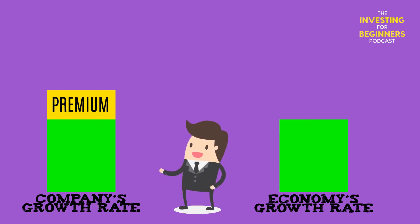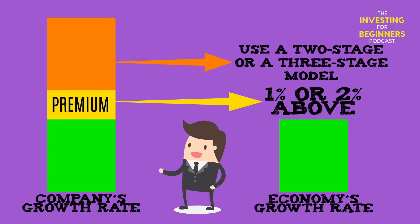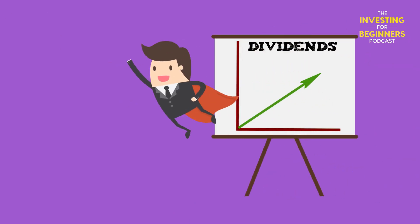Even in that case, the flexibility an investor has is limited. The sensitivity of the model to growth implies that the stable growth rate cannot be more than 1% or 2% above the growth rate of the economy. If the deviation becomes larger, the investor will be better served using a 2-stage or 3-stage model to capture the supernormal or above-average growth, and restricting the Gordon Growth Model to when the firm becomes truly stable. The bottom line is that these models are very reliant on a steady growth rate, and it cannot exceed the growth rate of the economy.